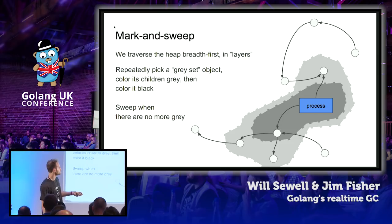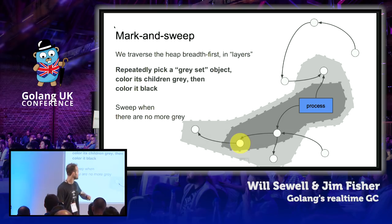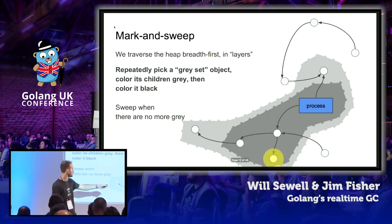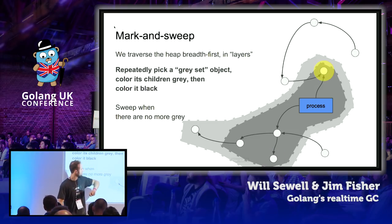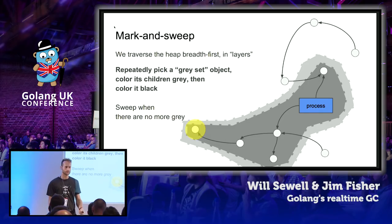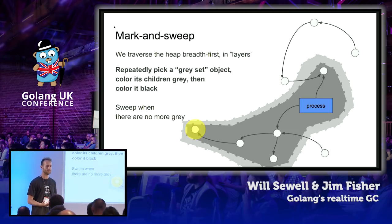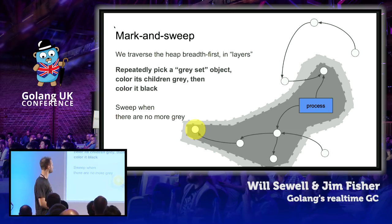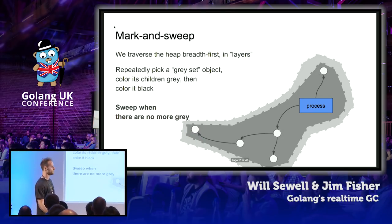Here's an illustration: we take an object from the grey set, mark it black, scan it, find a new object, and pull that into the grey set. We do that repeatedly until there are no more objects left in the grey set, and the Mark phase is done. At this point, everything in the black set is accessible — what you want to keep — and everything left in the white set is garbage. You go to your Sweep phase and sweep everything else away.